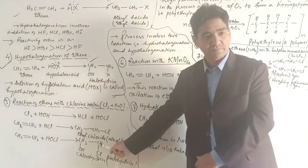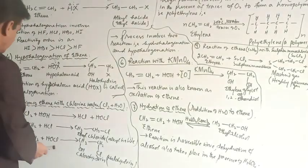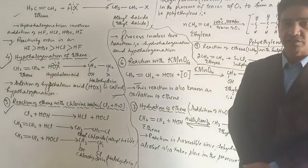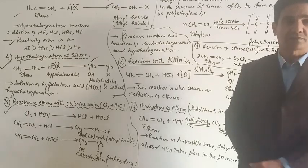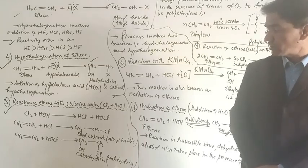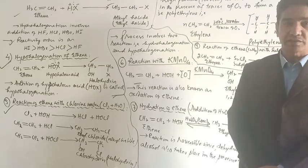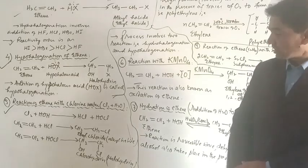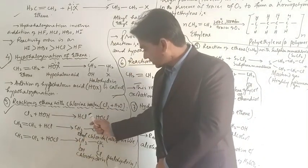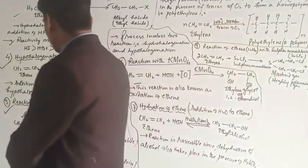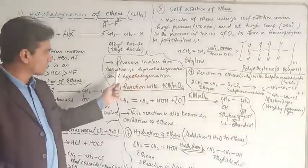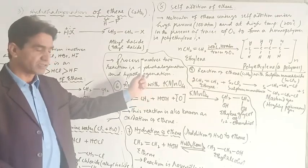When ethene, propene, or any unsaturated compound is treated with halogen water, this involves two reactions — hydrohalogenation and hypohalogenation — and a single product is not formed but a mixture of two products. When any alkene is treated with halogen water, how many products would be formed? Two products from two reactions: hydrohalogenation and hypohalogenation.